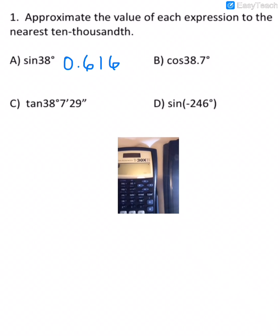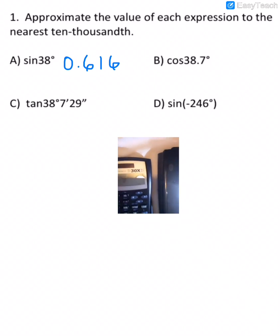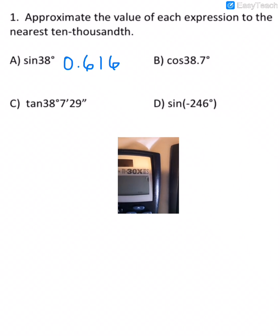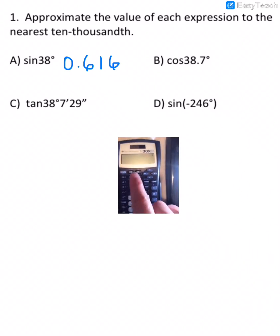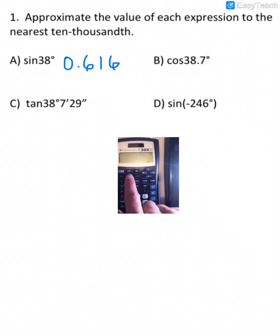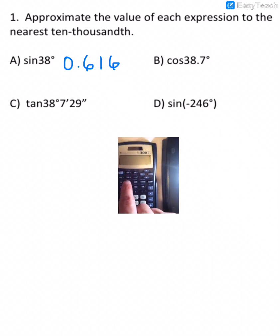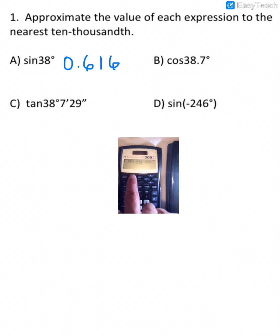This is actually in radians. So to change that, there is a button right here beside the second button that says DRG. So if we press that, it's on radians right now.